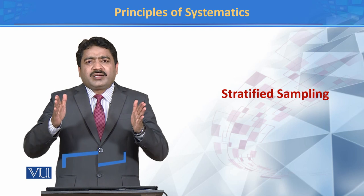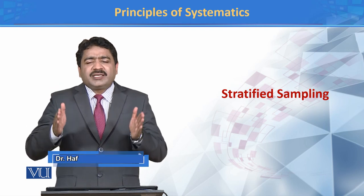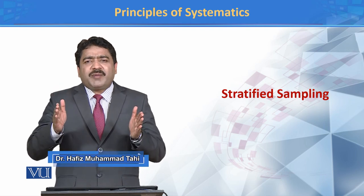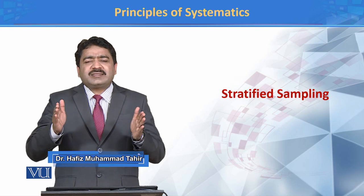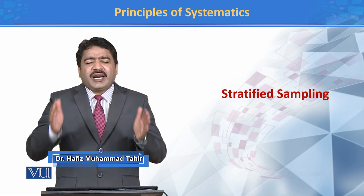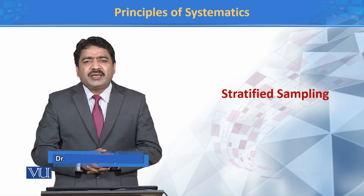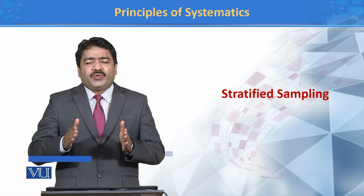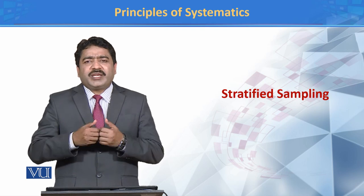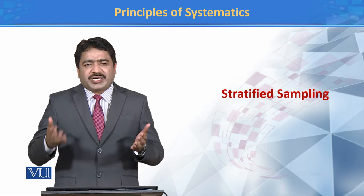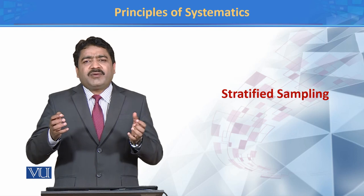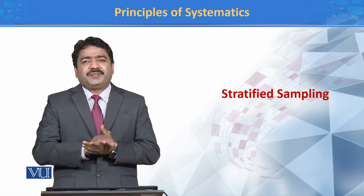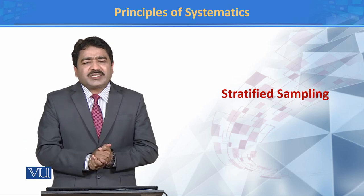और फिर ये जो grouping है, ये जो strata हमने बनाए हैं, उनमें से sample की selection randomly करते हैं. यानि हम, we divide our population into various groups — our strata — and then we select our sample from each strata randomly. For example,